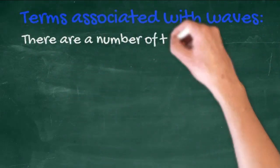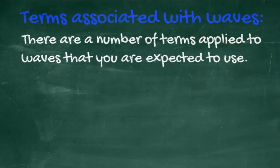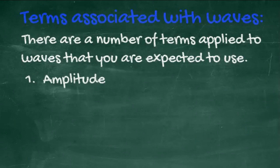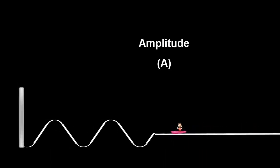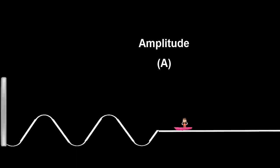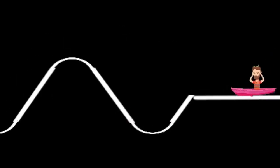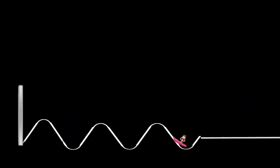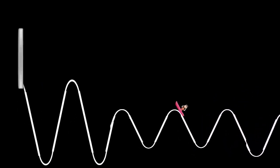Apart from frequency and wavelength, there are a number of terms applied to waves that you are expected to use. The first is amplitude. Amplitude is the distance from the midpoint of the wave to the peak or to the trough. The larger the amplitude, the greater the amount of energy — so a sound wave would be louder, and a light wave would be brighter.